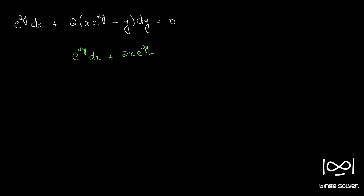This can be written as d of x into e raised to 2y, since there is e raised to 2y here and x into 2 e raised to 2y dy. Using the product rule, we have the differential of the first function dx into e raised to 2y, plus the first function x into the differential of the second function e raised to 2y, which is 2x e raised to 2y dy.